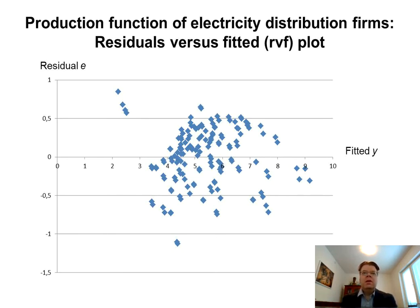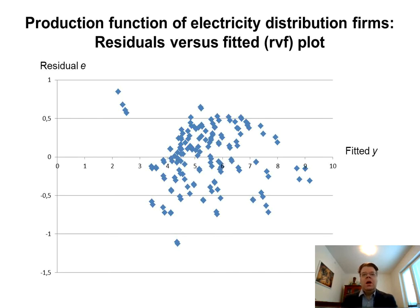It's quite easy to make this kind of RVF plot in Excel because Excel can produce the fitted values and the residuals directly — you just need to plot them, or you can even check the options to make it automatically. This is an example of the electricity distribution firms that I used previously as an example of the instrumental variable regression.